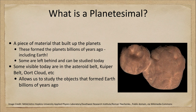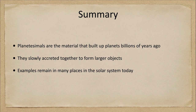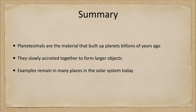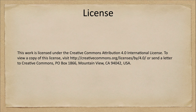Let's finish up with our summary. What we've looked at today is that the planetesimals are the material that built up the planets billions of years ago — they slowly accreted together to form the larger objects we see today, but examples remain in many places in the solar system for us to study. That concludes this lecture on planetesimals. We'll be back again next week for another special topic in astronomy, so until then, have a great day everyone, and I will see you in class.